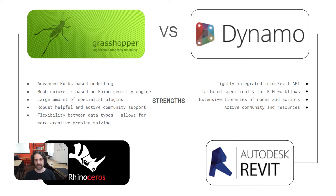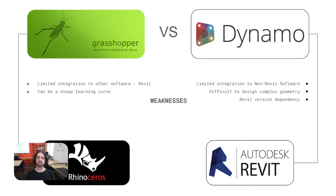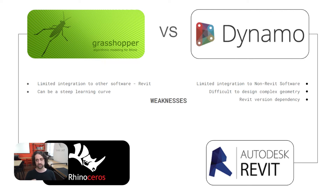Dynamo also has a very active community and lots of resources available. The weaknesses of both really come down to interoperability. Grasshopper has very limited integration into other software — i.e., Revit — and it can be quite a steep learning curve for newcomers. Dynamo, on the other hand, has very limited integration into non-Revit software, making it very difficult to design complex geometries. Dynamo is also Revit version-dependent, so whichever version of Revit you're using, you'll have to align your Dynamo files with that version.